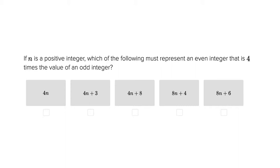Hi, this is Carlos Cousins and we're now going to solve a problem that deals with even and odd integers. Let's go ahead and read this one together. If n is a positive integer, which of the following must represent an even integer that is four times the value of an odd integer?